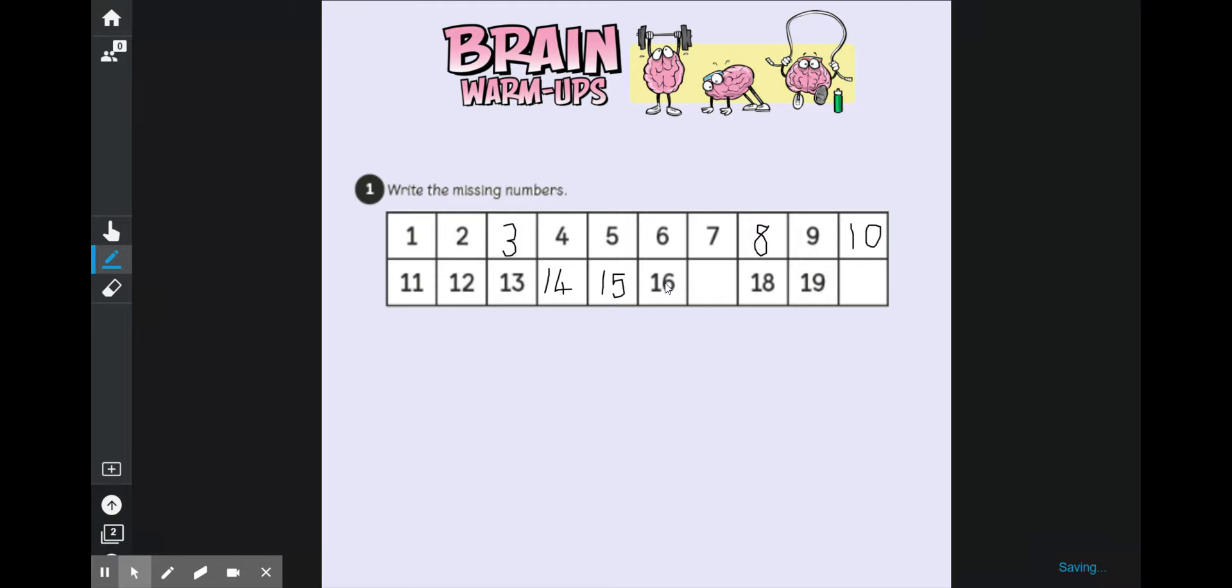16, 1 ten, 6 ones. We need 17, 1 ten, 7 ones. 18, 19, finally 20, which is a little bit different because it has got 2 tens and 0 ones.